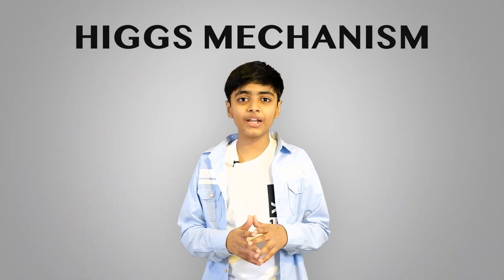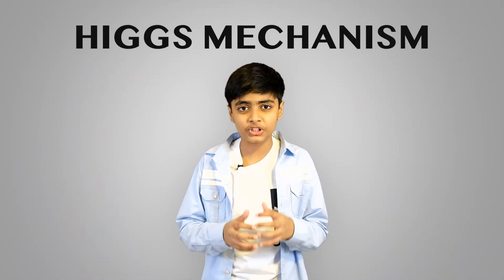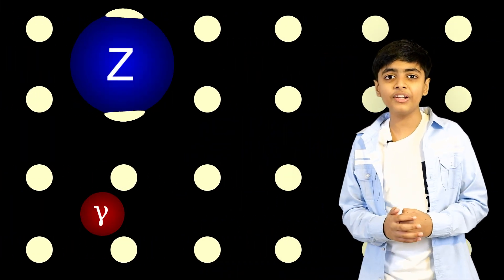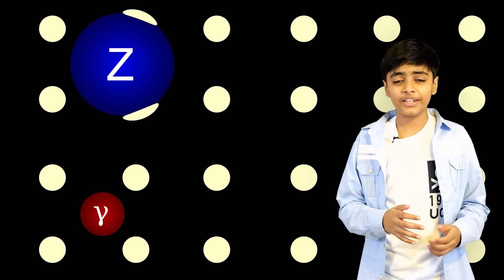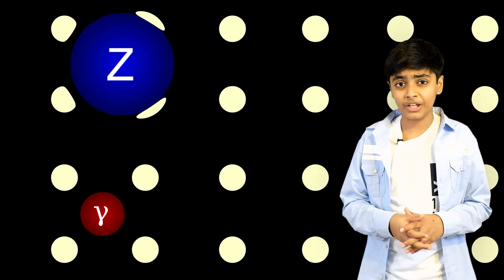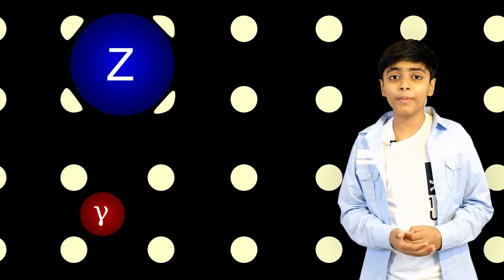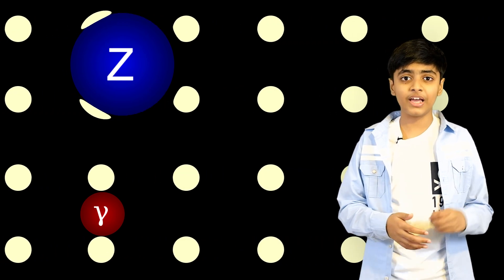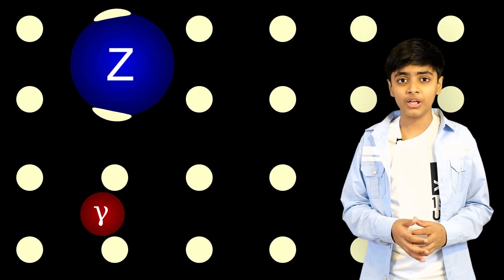The Higgs mechanism talks about the Higgs field and states that each particle interacts differently with the Higgs field, therefore they have different mass. The more a particle interacts, the more mass it has, and vice versa.